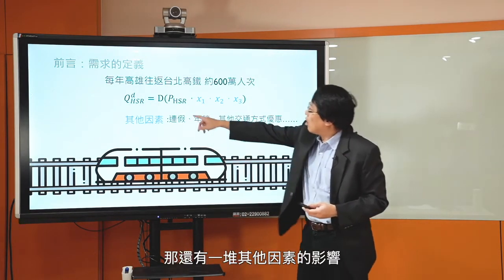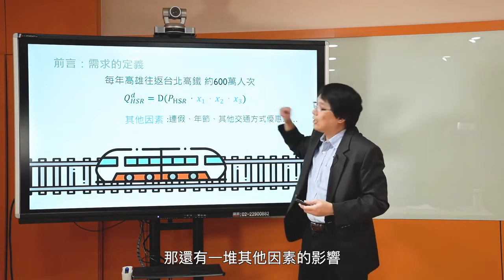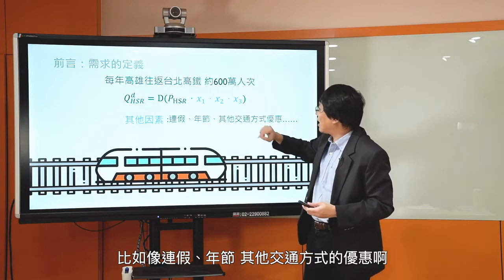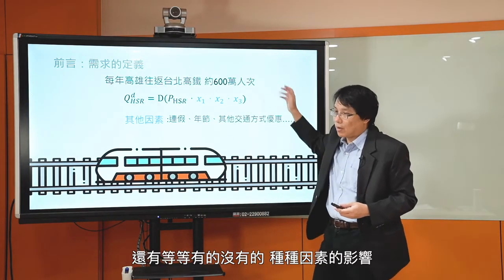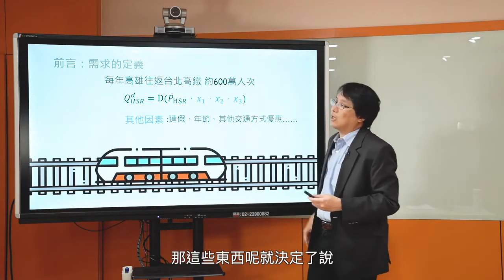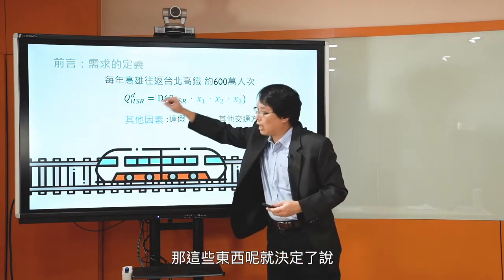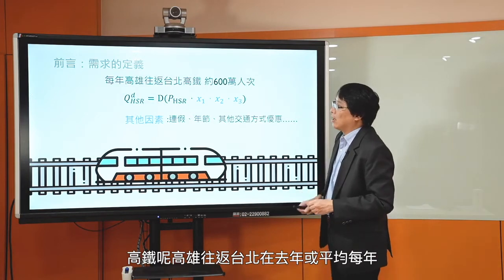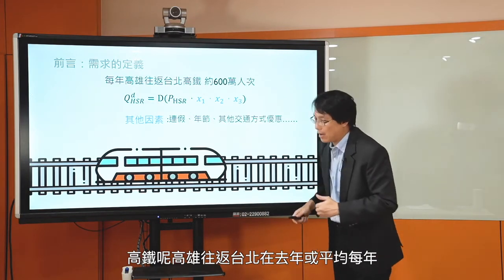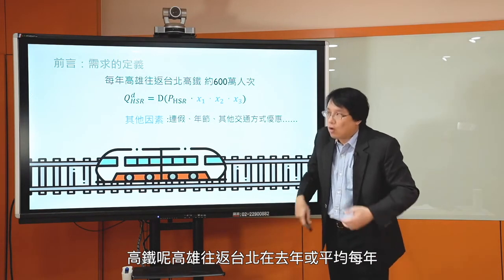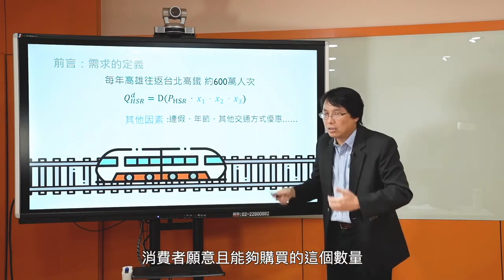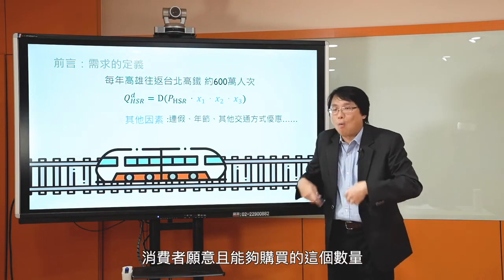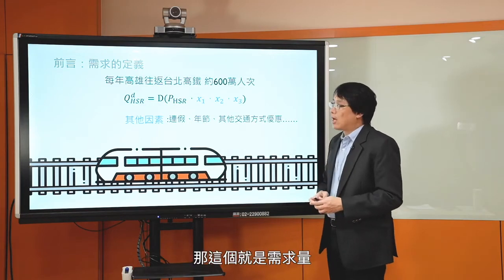这个需求量600万人次会受到很多因素的影响。简单来说会受到价格的影响，现在高雄往返台北的价格大概是2900多元。还有其他因素，比如年假、其他交通方式的优惠，以及种种因素的影响。这些东西决定了高铁高雄往返台北每年消费者愿意且能够购买的数量，这就是需求量。